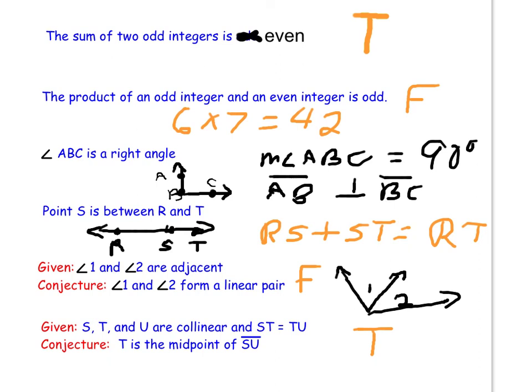Now complete the third example of a given and a conjecture on your own. Determine whether it's true or false, and if it's false, draw a counterexample. I can't wait to see what you come up with in class tomorrow.